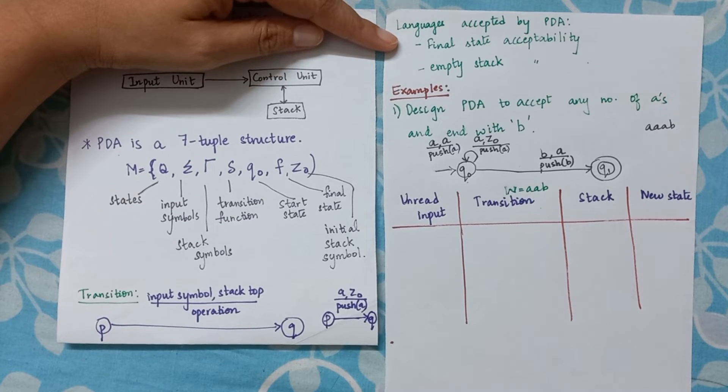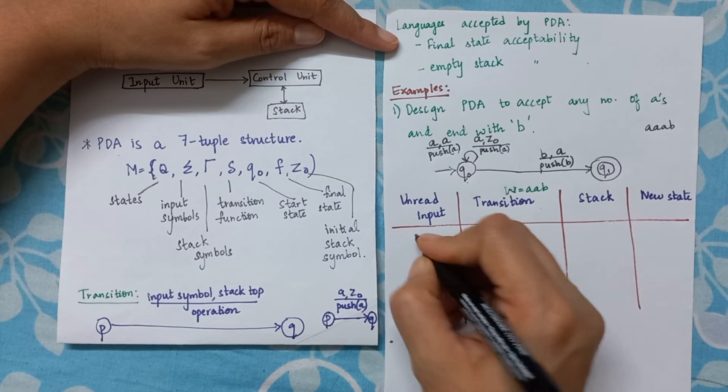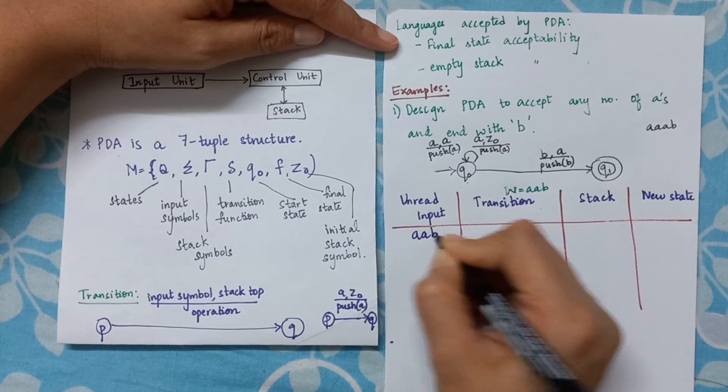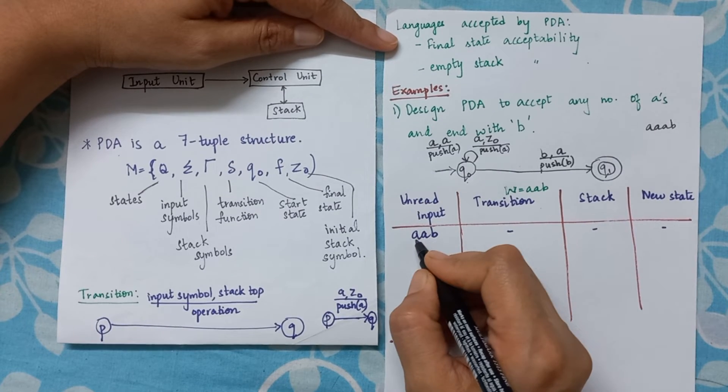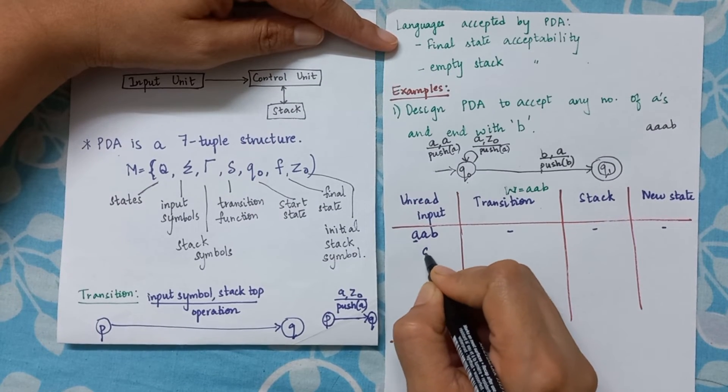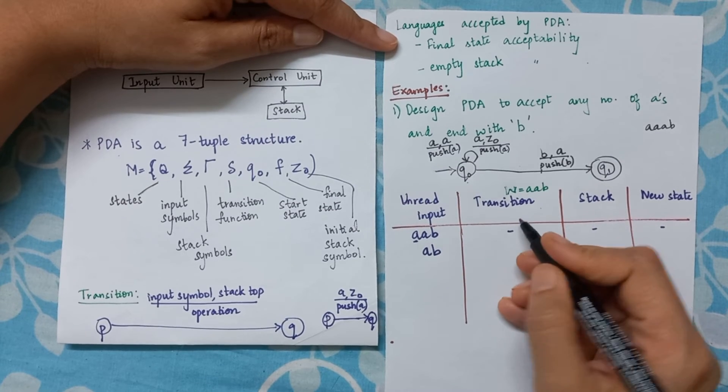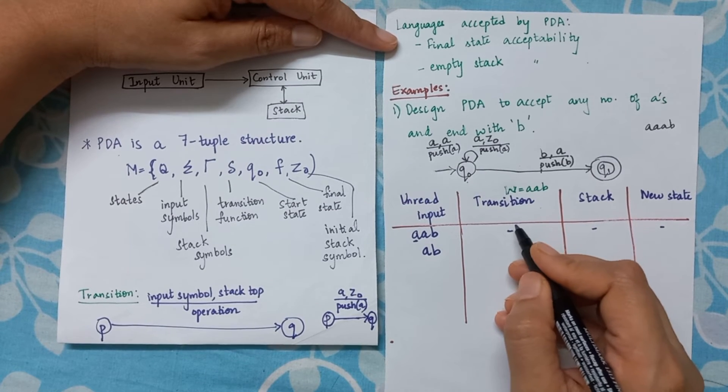So here in this case we have aab as the input. Now I read the first alphabet here, so I am left only with ab.